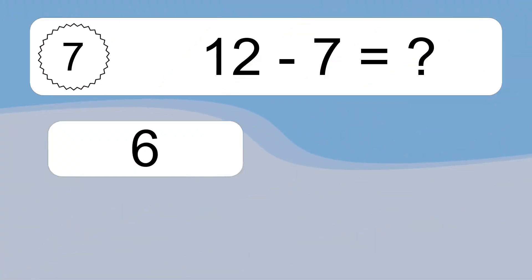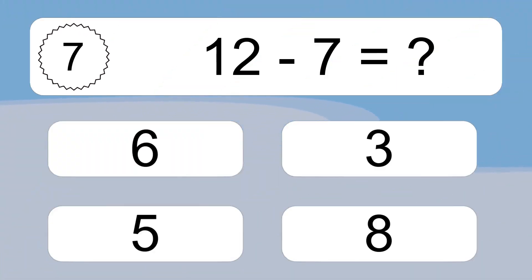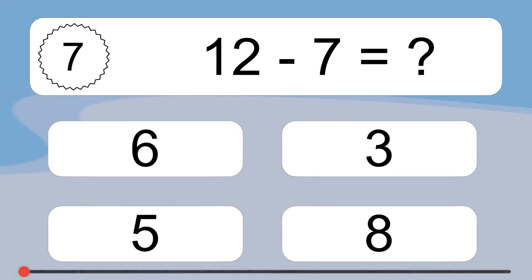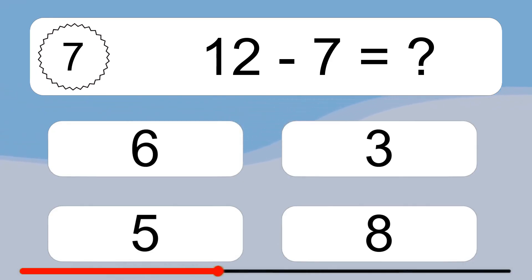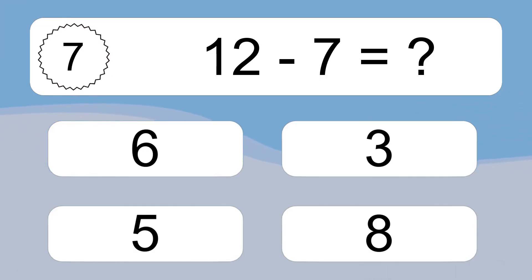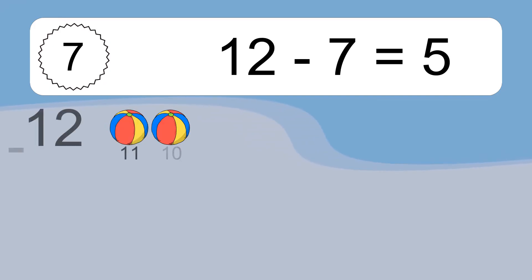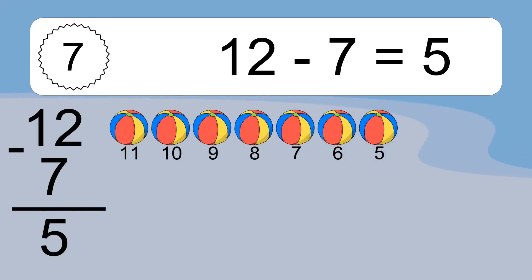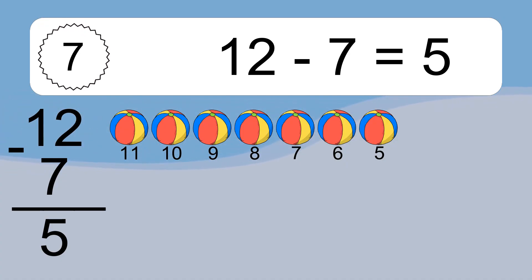12 minus 7 equals what? 12 minus 7 equals 5. Let's count it. 11, 10, 9, 8, 7, 6, 5.